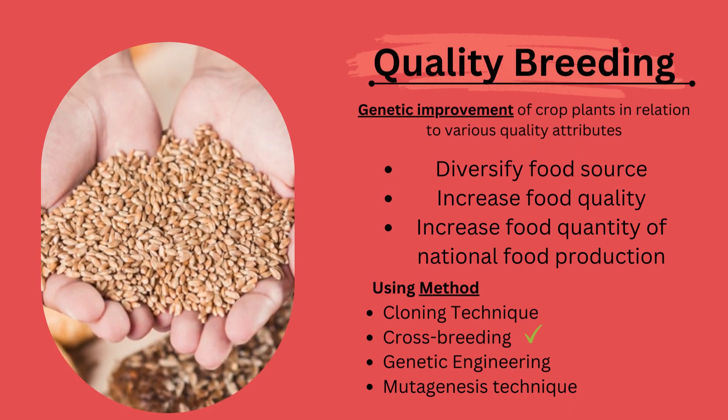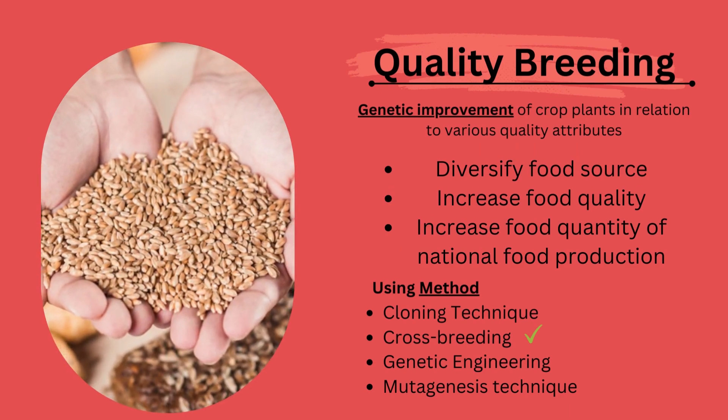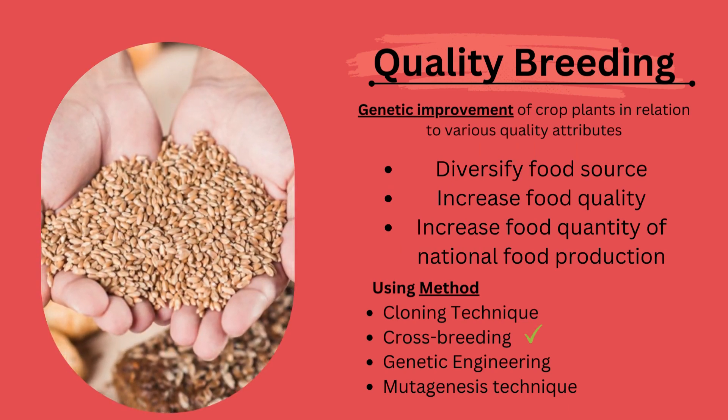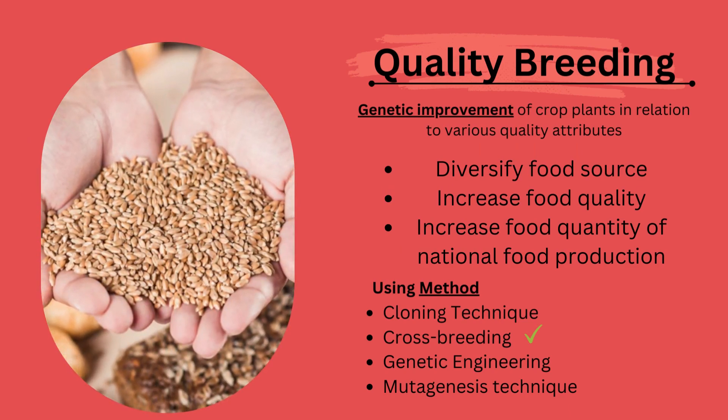Quality breeding is the genetic improvement of crop plants in relation to various quality attributes to diversify food sources, increase food quality, and increase the food quantity of national food production. In quality breeding, we use methods of cloning technique, cross-breeding, genetic engineering, and mutagenesis technique.